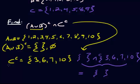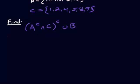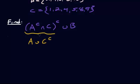In this example we have, in parentheses, A complement intersect C, and then we're going to take the complement of that set, and we're going to union that with B. If you're familiar with DeMorgan's Law, you can distribute this complement and it would turn out to be A union C complement, which is a little easier to work with. But we'll do it the straightforward way.